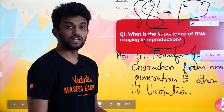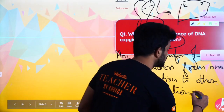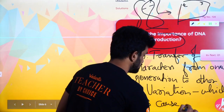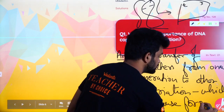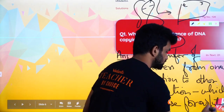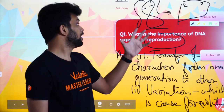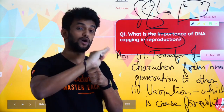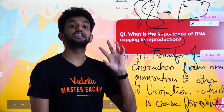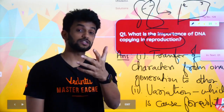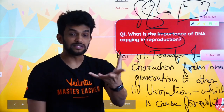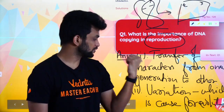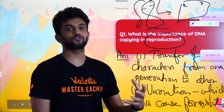This leads to variation, which is the cause of evolution. The first important point is that DNA copying helps in transfer of characters from one generation to the other. The second point is that it leads to variation — variation means difference amongst the organisms of the same species. We are the same human species, but there is a little difference in people because of this variation.